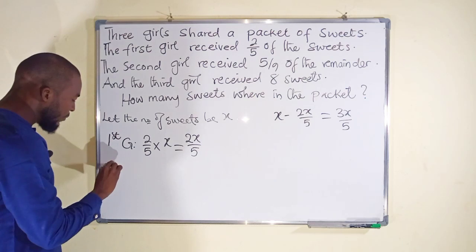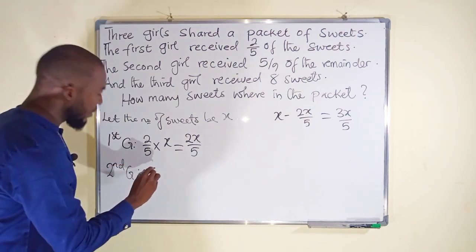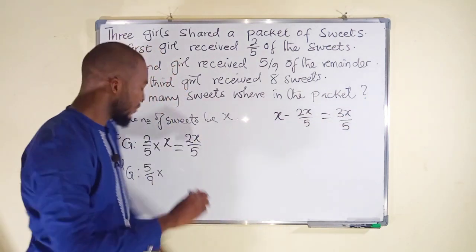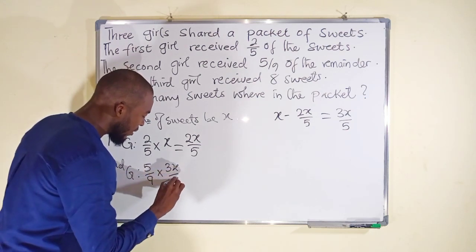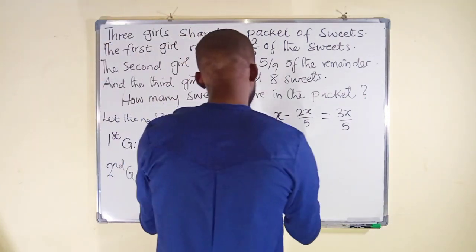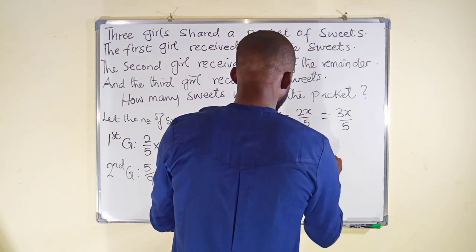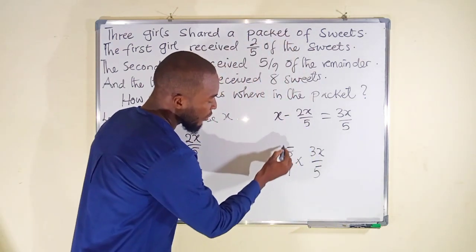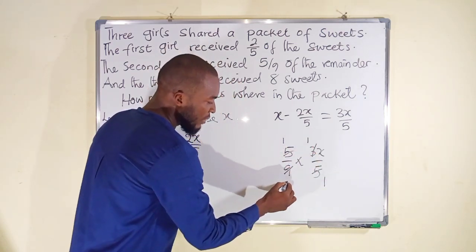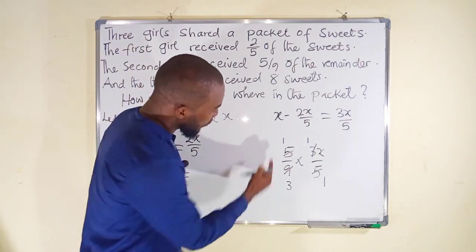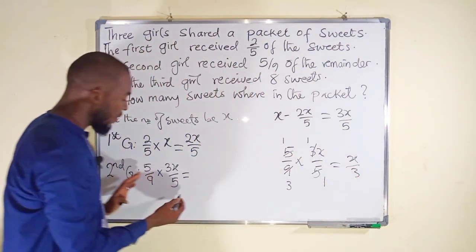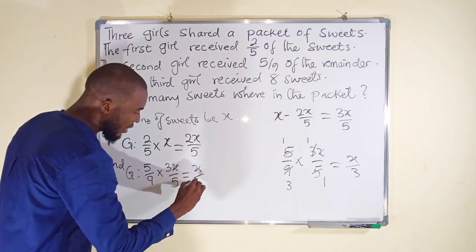The second girl received five over nine of, which is multiplication of the remainder, 3x over 5. Let us simplify this elsewhere, then we can write the value directly here. We have five over nine multiplied by 3x over 5. Five can go into five one time, three can go into nine three times. All we have left is one times one times x is x, and three times one is three. So this is x over 3.